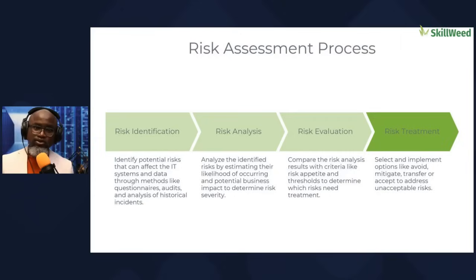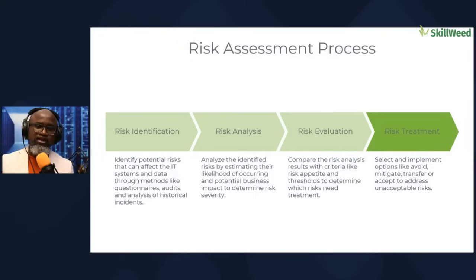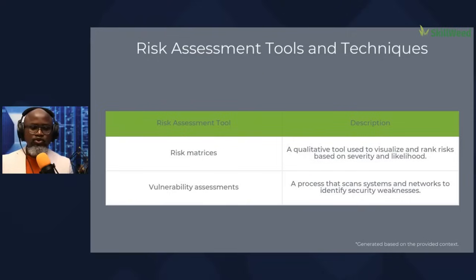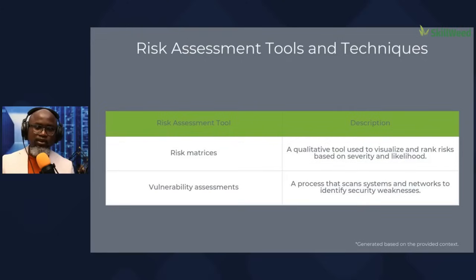Risk treatment means we have options: we can avoid the risk, mitigate the risk, or transfer the risk — like having cyber insurance — to ensure that if there is an issue, we can survive it long-term. Some tools people use include risk matrices, where we manually review risks and give them scores based on a maturity model, producing a risk scorecard.